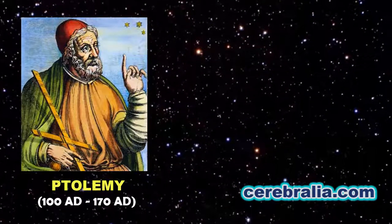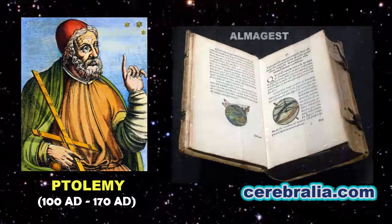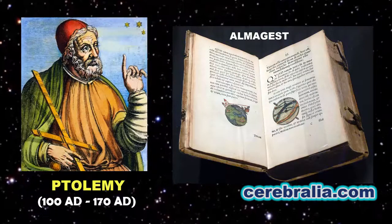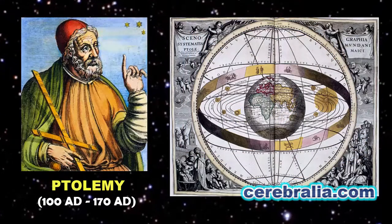In the second century AD, the astronomer Claudius Ptolemy wrote the Almagest, his most famous work, where he developed the most comprehensive geocentric model.